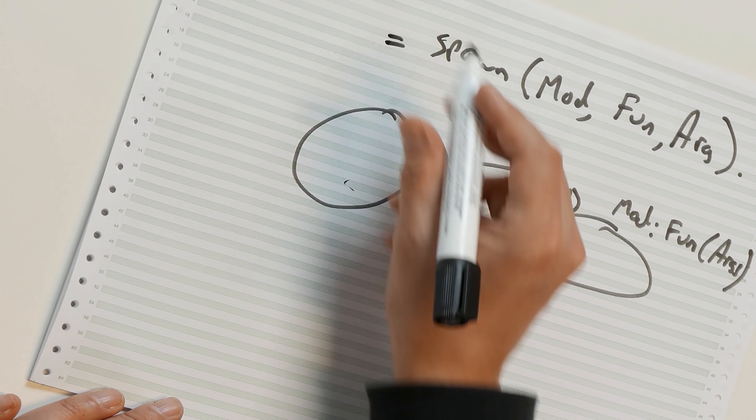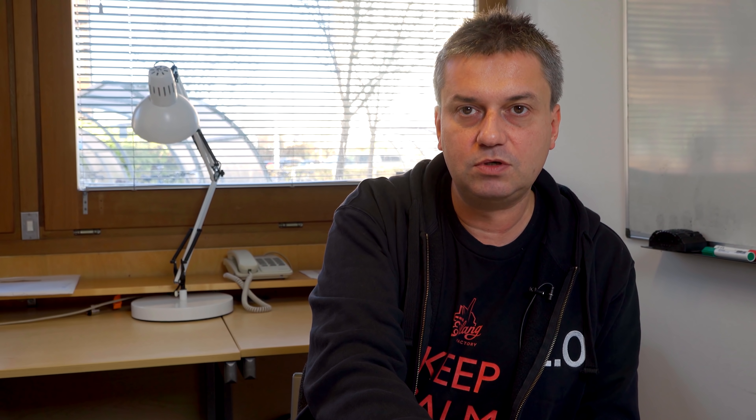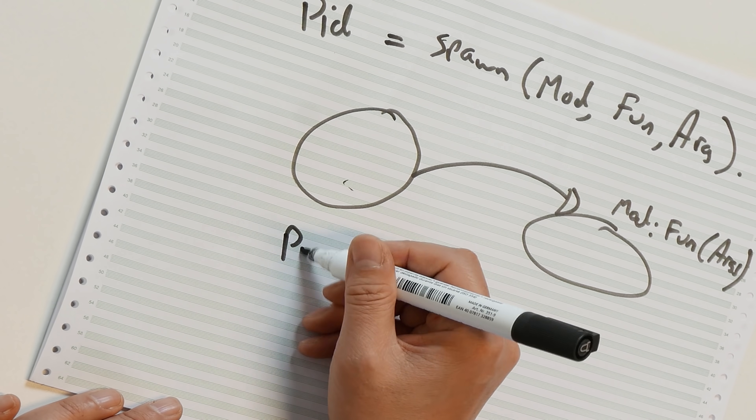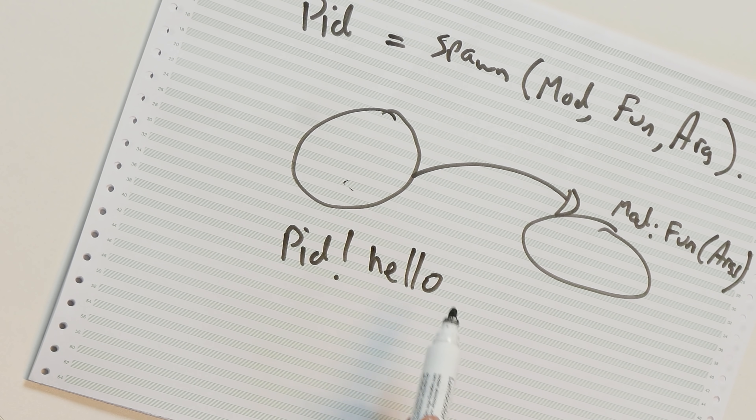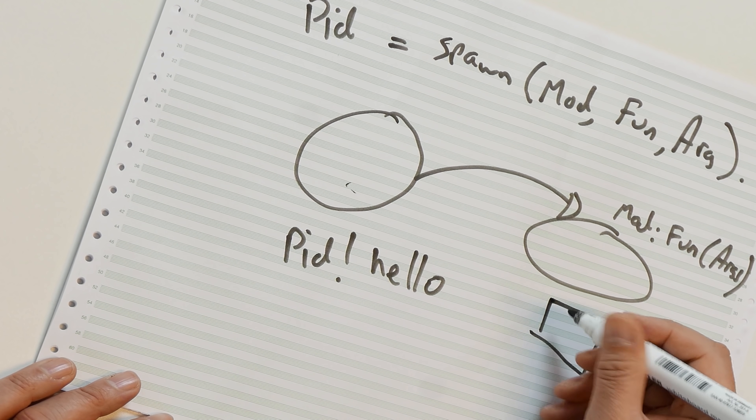Processes do not share memory. They communicate with each other through message passing. When we spawn a new process, the spawn built-in function returns a process identifier, which we bind to the variable 'pid'. This process can then send a message to the other process — here we're sending an atom 'hello'. An atom is a constant literal; what you see is what you get, used for comparison and readability. A copy of this atom gets stored into the process mailbox of the other process. The key points: lightweight processes, no shared memory, communication through message passing.